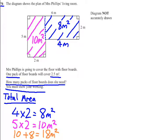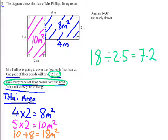Now if we read the question it says how many packs of floorboards are we going to need or does she need. And one pack covers 2.5m². So do 18 divided by 2.5 and that actually gives us an answer of 7.2. Therefore she needs more than 7 packs. As you can't get half packs she'll have to have 8 packs.